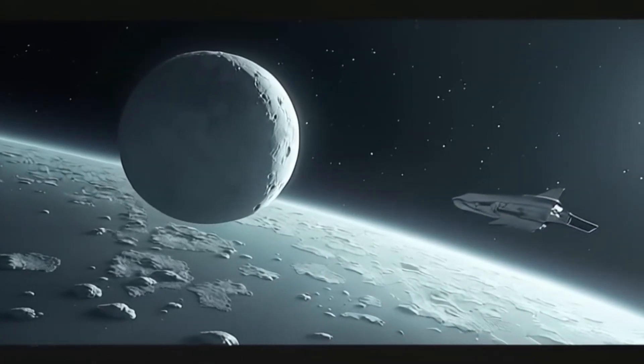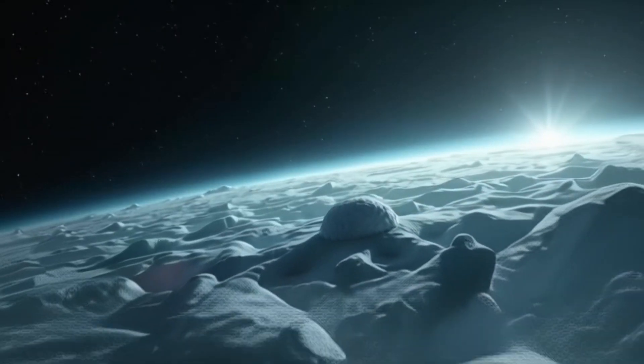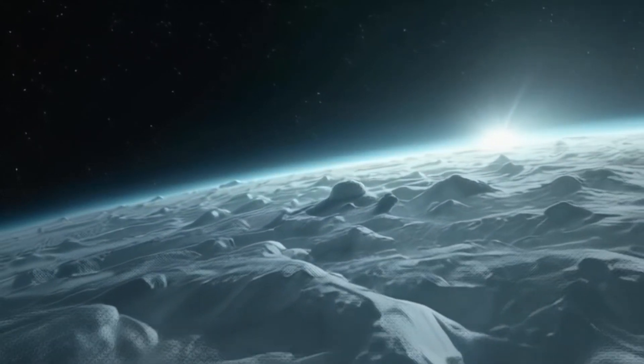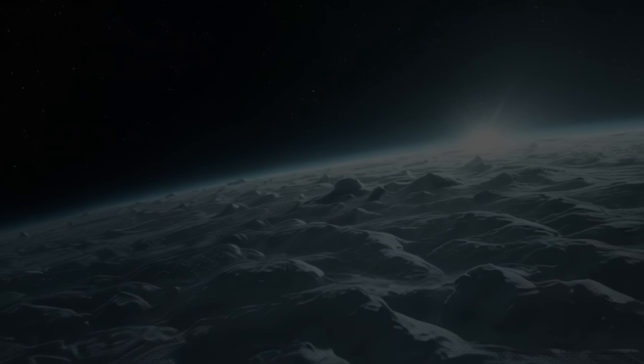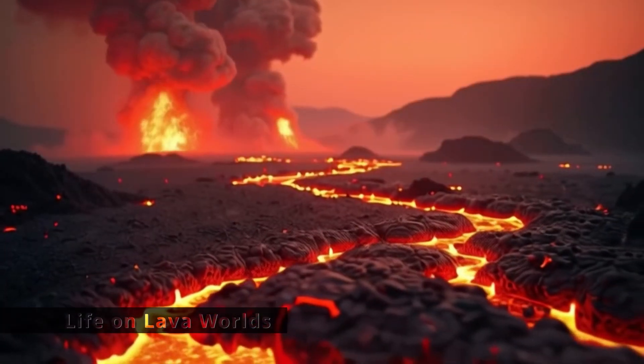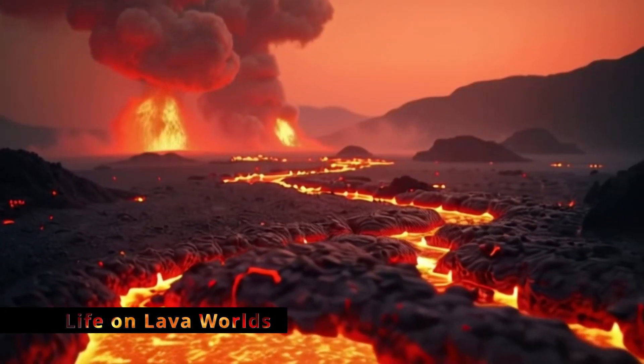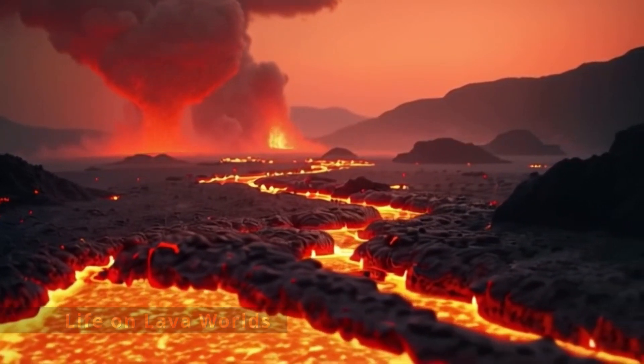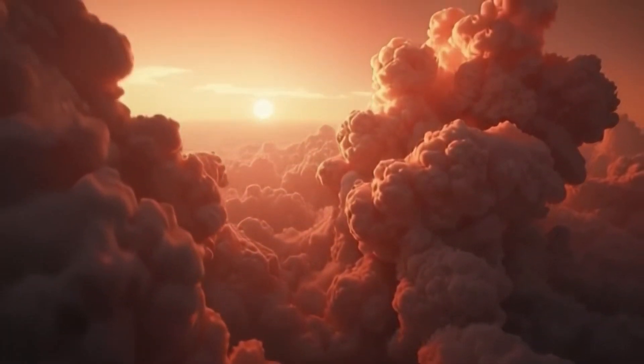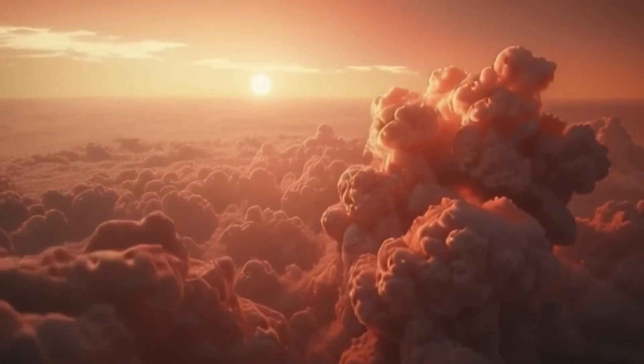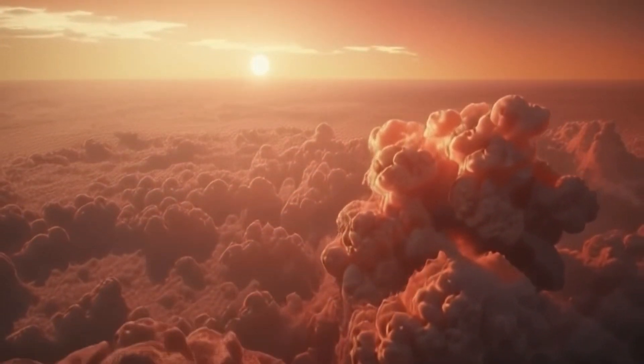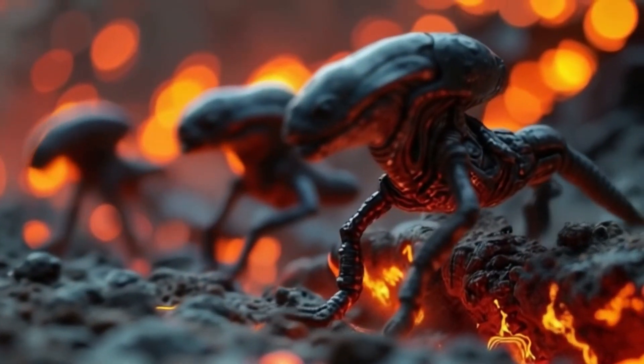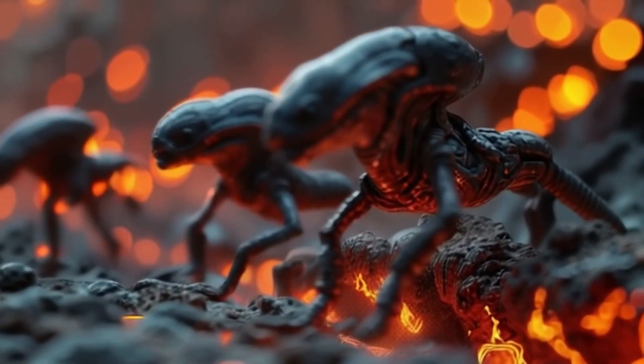Ocean worlds like Europa and Enceladus may become the next frontiers in our search for life. One day, we may discover life beneath the ice, proving that life can thrive in even the most extreme places. On planets like 55 Cancri e, the surface is a molten landscape of lava rivers and erupting volcanoes. Above, the atmosphere swirls with toxic gases, creating a hostile environment for life as we know it. Life could adapt to these brutal conditions, thriving through chemical processes we've never imagined.